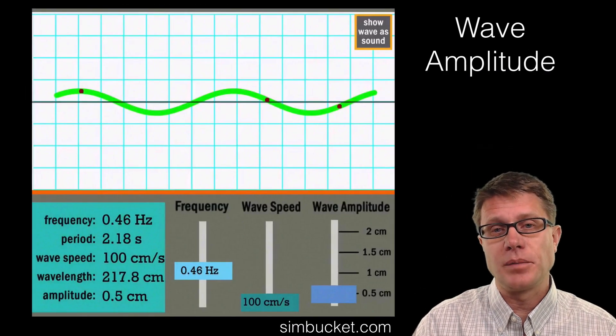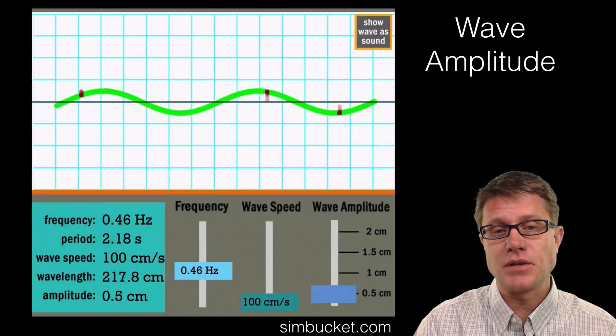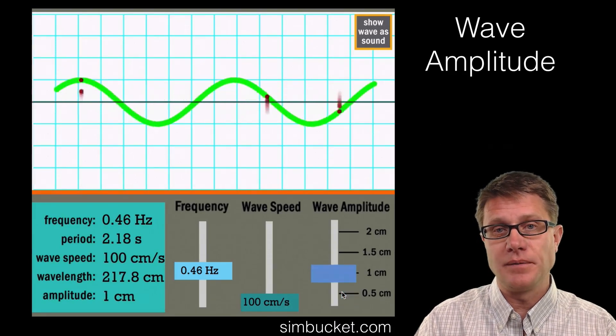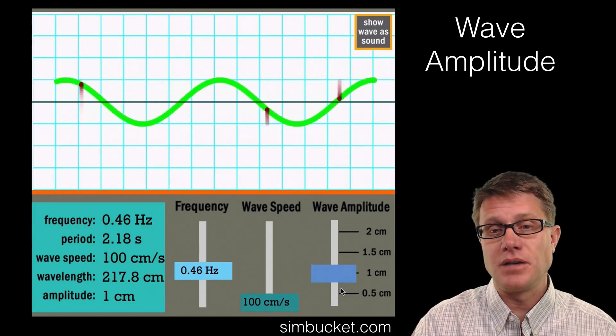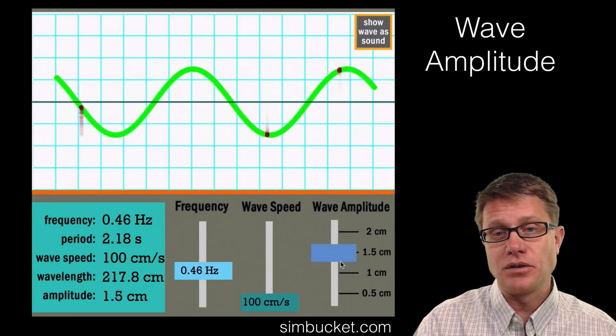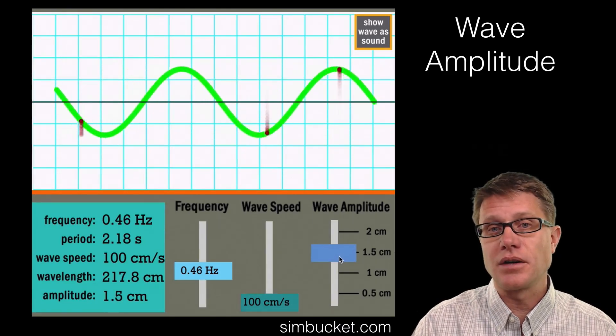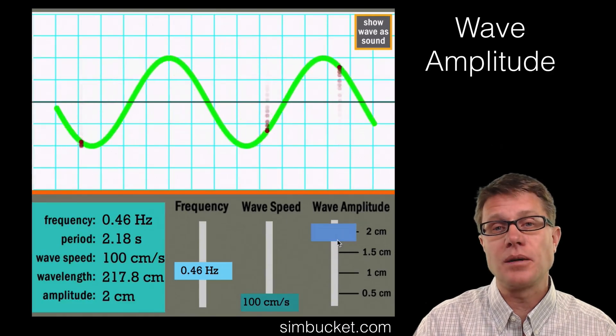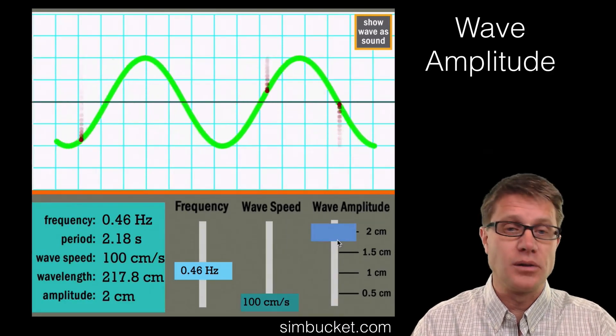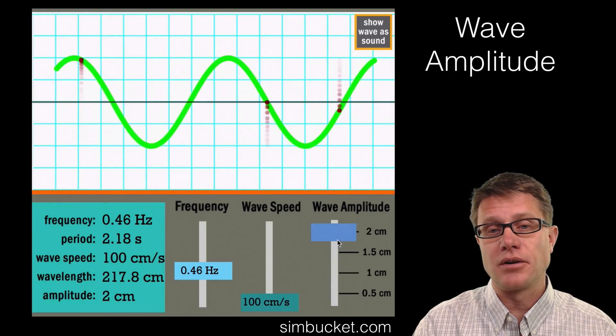So let us take a look at wave amplitude using a simbucket simulation. So we have got a rope wave here. You can see the wave is moving from left to right. But the oscillation is perpendicular. So this is a transverse wave. But as I increase the amplitude what is happening? You can see there is greater and greater oscillations. What does that imply about the wave energy? The higher the amplitude and the lower, below equilibrium, the greater energy that we have.